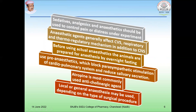Some sedatives, analgesics, and anesthetics should be used to control pain or distress during experiments. Anesthetic agents generally produce cardiovascular, respiratory, thermoregulatory, and central nervous system problems. Before administration, one must address all these problems with pre-anesthetic medication. Animals are prepared by overnight fasting, and pre-anesthetic medication is given to block parasympathetic stimulation of the cardiopulmonary system and reduce salivary secretion. Atropine is the drug of choice as an anticholinergic agent that reduces bronchial secretion.